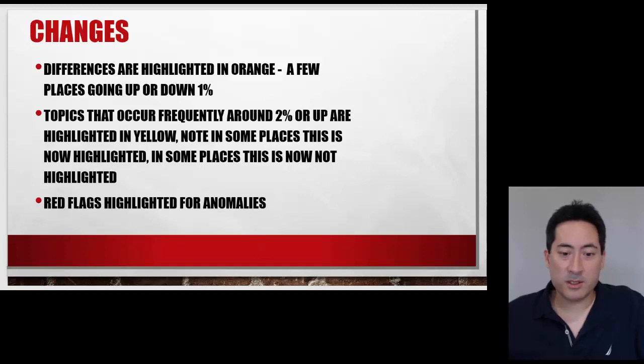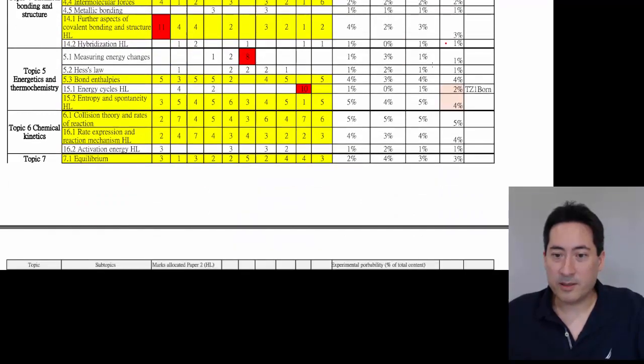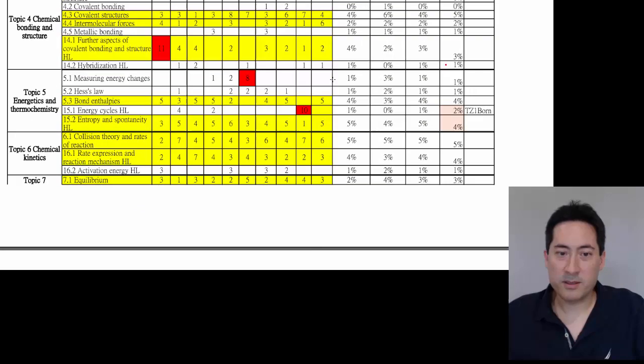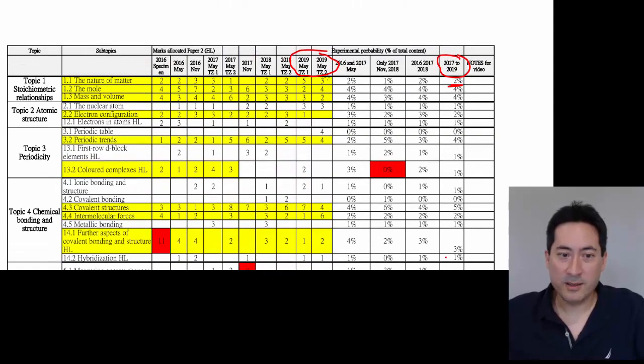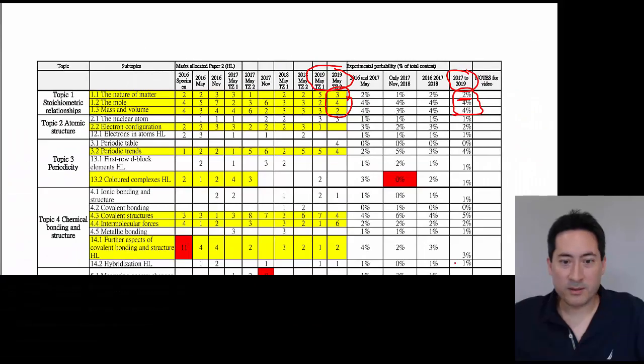So moving on to the changes, I will just jump to the analysis here now. So what you can see here is I've highlighted in this light pink color the changes. You can see that there's generally only 1% up or down in all of these things. So no huge changes. They do generally stick to the pattern. You can see that obviously topic 1 is always going to give you about 10% of your marks. They pretty much never talk about periodic table. So suspicious. Why did they put that in there? I don't know.